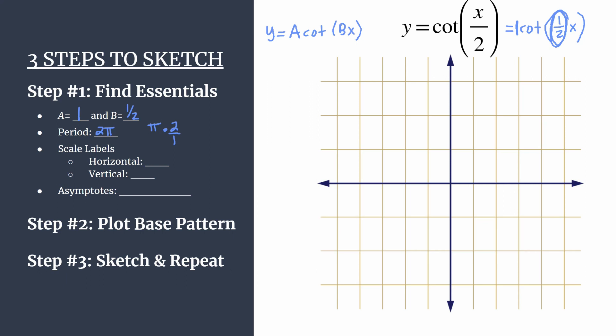So now we can choose how to label our axes. With this method, I like to be really intentional about the horizontal axis and how I label it. The base pattern in the second step is going to have four key components. And I like those components to align with the horizontal tick marks. So to get this to happen, take your period and divide by 4. So 2 pi divided by 4.